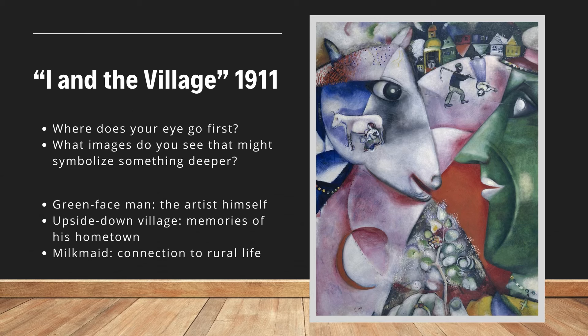I want to point out a few of the items that Chagall used as symbols. The green-faced man is actually the artist himself. The upside-down village you can see at the top represents memories from his hometown. And you can see the milkmaid inside the goat's face as a connection to rural life. There's a ton of other symbols in here — the man with the scythe representing that farm childhood, and an olive branch at the bottom representing peace. There are so many more things you can find within the image if you just take the time to look and observe.